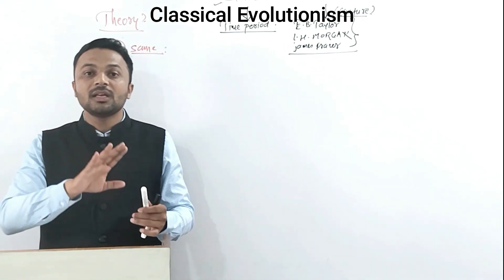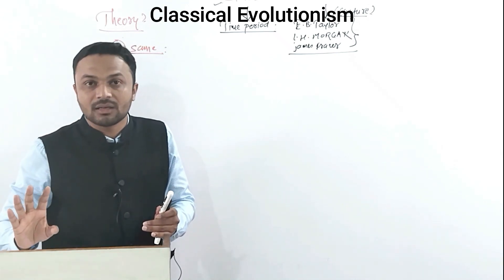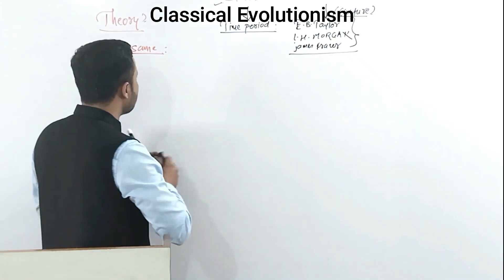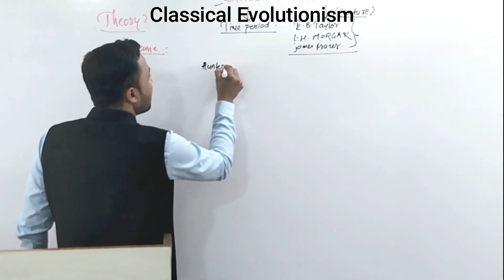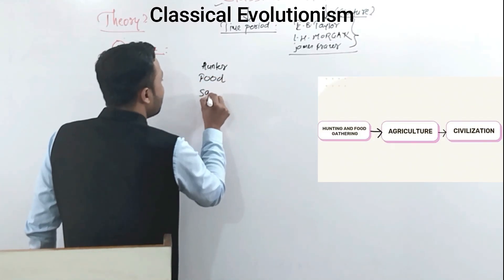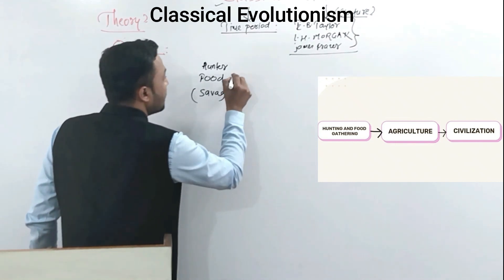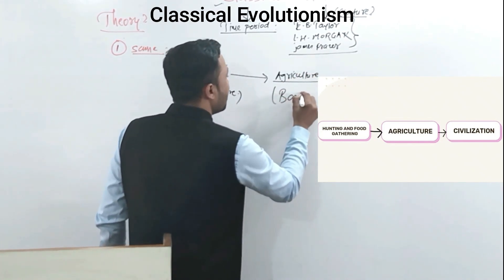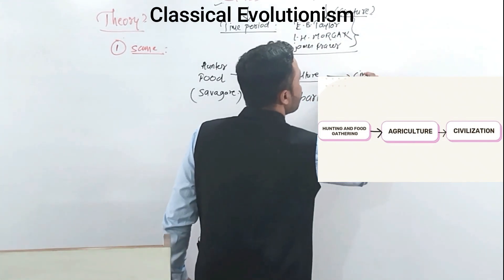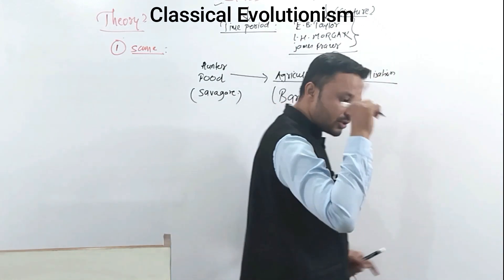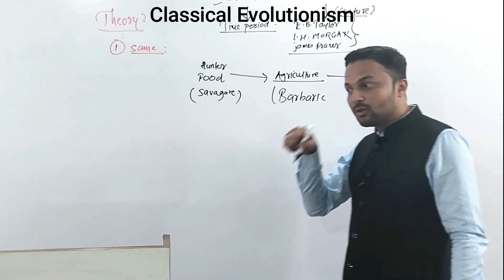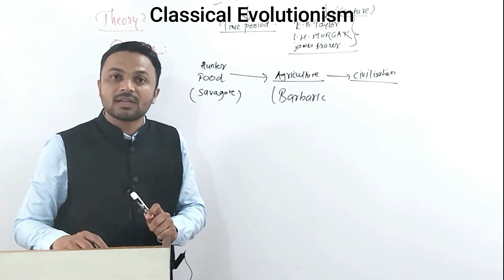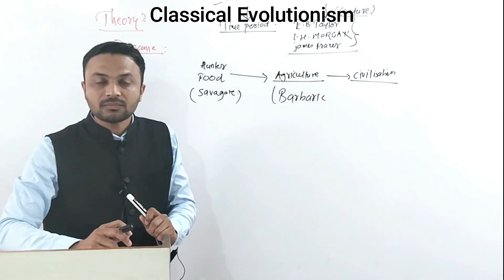These three anthropologists said that culture has evolved in the same manner everywhere. Earlier, people were hunters and food gatherers — that was the savagery period. Then there was the period of agriculture — from hunting and food gathering to agriculture, that is the barbaric period. And from agriculture there was the growth of civilization. These three anthropologists maintained this opinion about how culture evolved.